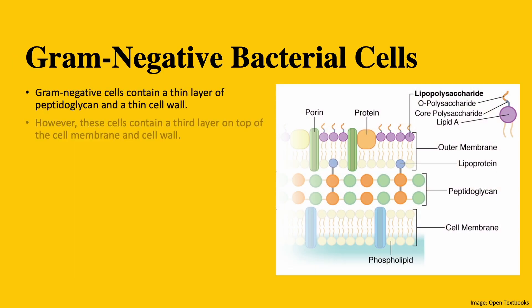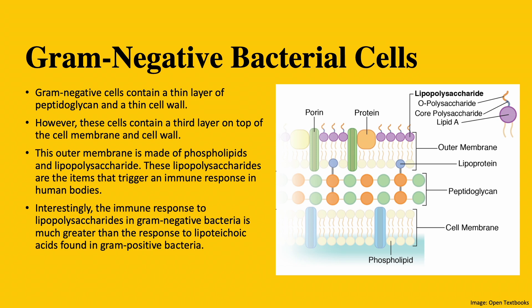Gram-negative bacterial cells contain a thin layer of peptidoglycan and therefore have a thin cell wall. However, these cells contain a third layer on top of the cell membrane and the cell wall. This outer membrane is made of phospholipids and lipopolysaccharides. These lipopolysaccharides are the items that trigger the immune response in human bodies. Interestingly, the immune response to lipopolysaccharides in gram-negative bacteria is much greater than the response to lipoteichoic acids found in gram-positive bacteria.